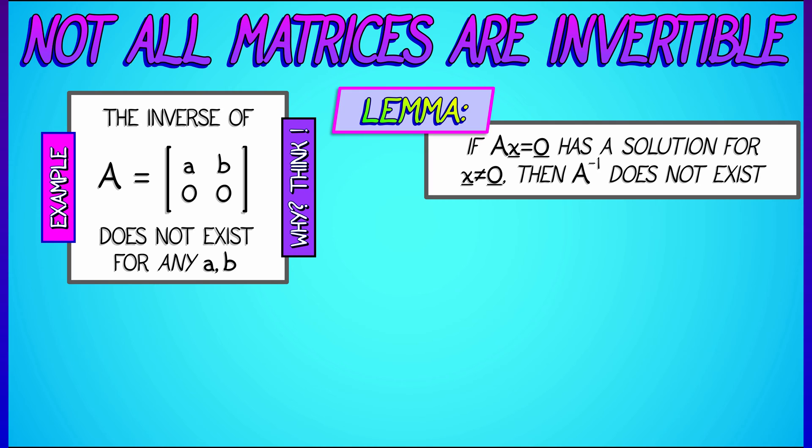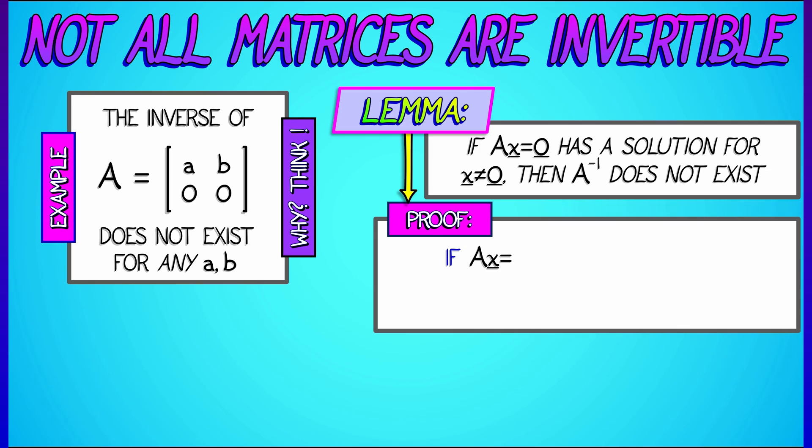How do we see that? Here's a proof, and it's going to be just like the last one we did. If we assume that Ax=0 and A is invertible, then we can begin with x and rewrite it as the identity matrix times x, and then use the definition of the inverse to replace that identity with A inverse times A. Now, regrouping the parentheses, we get A inverse times quantity Ax.